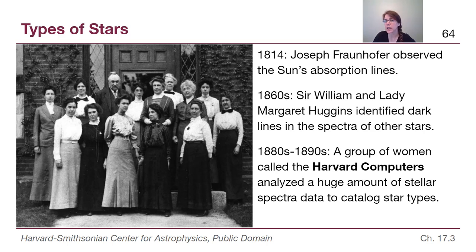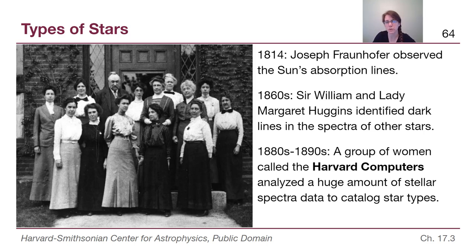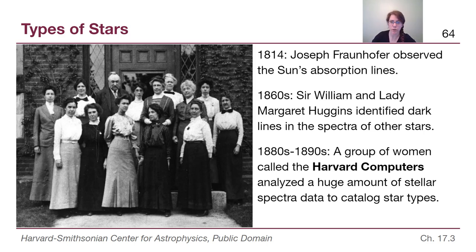They saw that the same elements known to exist in the Sun also existed in other stars, but that some of those lines were stronger than others and differences could be determined. In the 1880s and 1890s, a group of women called the Harvard Computers — because they were people who computed things, shown here in the picture — analyzed a huge amount of stellar spectra. One of the major breakthroughs was a catalog of different types of stars.